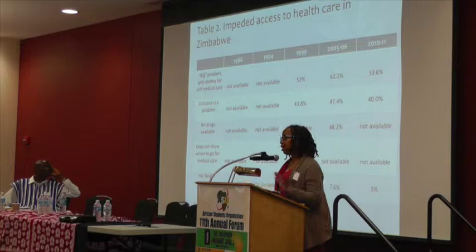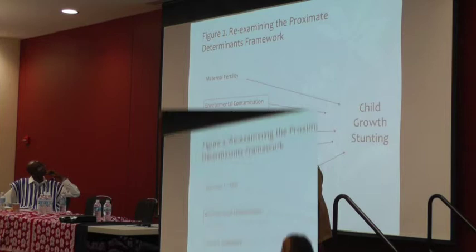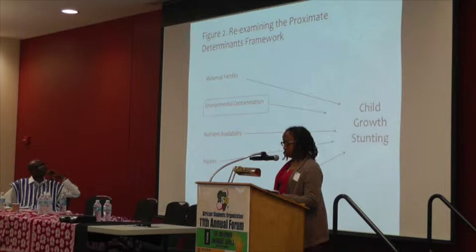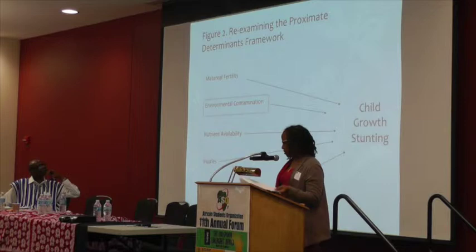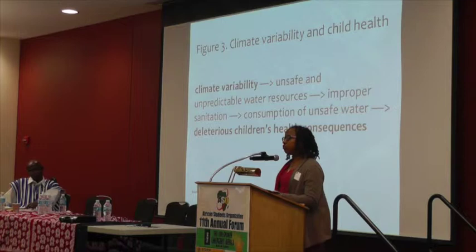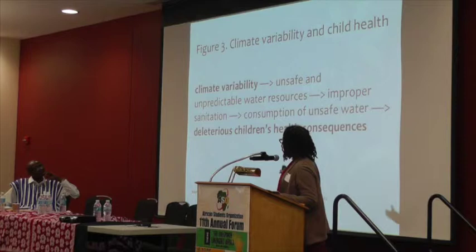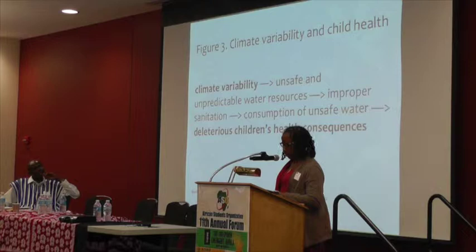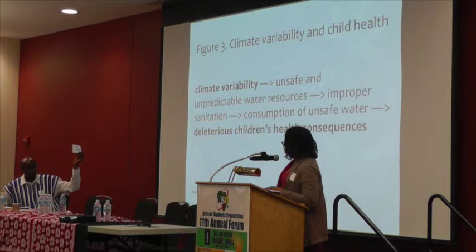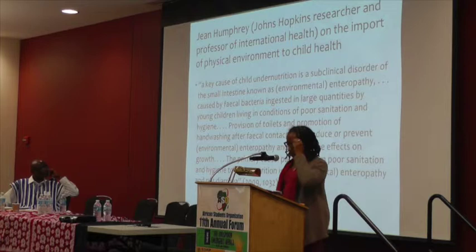Access is affected by cost, transportation, and even lack of medications. The second proximate determinant of chronic malnutrition is environmental contamination. One dominant feature of child health in Africa is that lack of access to clean water and proper sanitation leads to many preventable diseases and death. Climate variability is one factor modeled by Nobel Peace Laureate Dr. Wangari Maathai, who depicts one way to model the relationship between climate variability and child health. Unpredictable water resources and improper sanitation lead to deleterious children's health consequences.